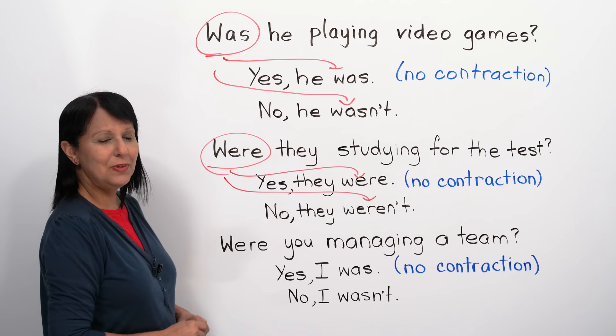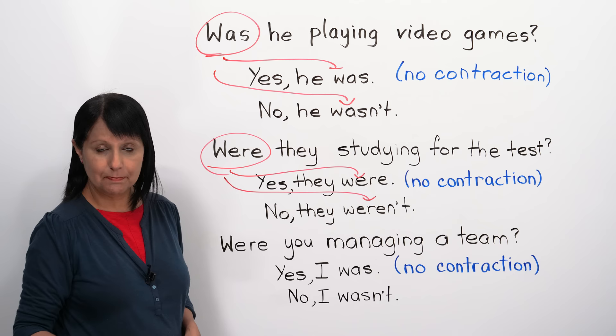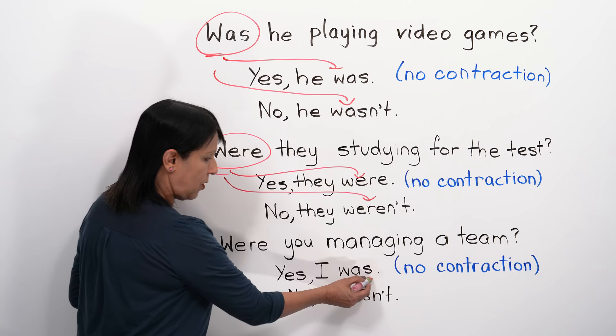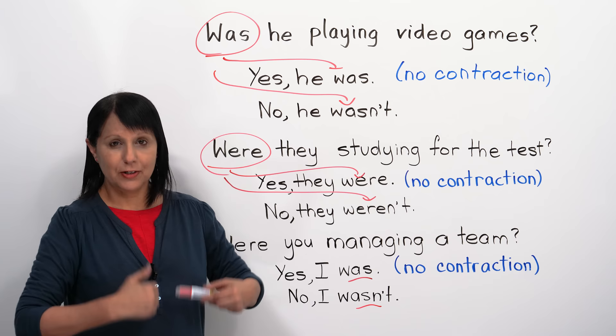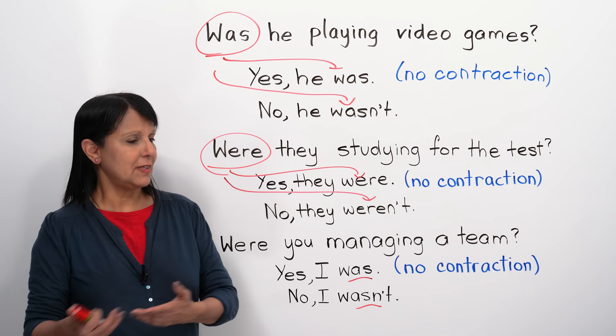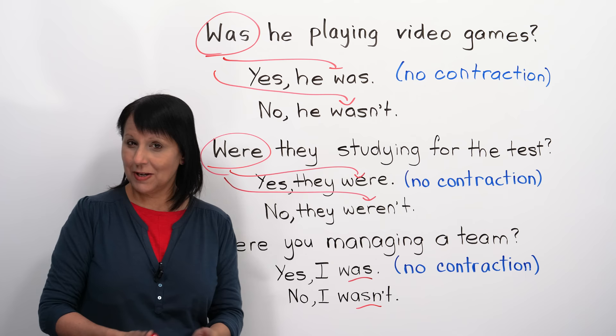The only exception is for questions about 'you.' If someone asks 'Were you managing a team?' you cannot answer 'Yes, were.' Instead say 'Yes, I was' or 'No, I wasn't.' Because people will often ask you questions about yourself, it's good to memorize these: 'Yes, I was' and 'No, I wasn't.' Were you paying attention to this lesson? I hope you said, 'Yes, I was.'